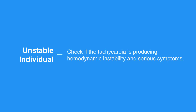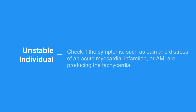Check if the tachycardia is producing hemodynamic instability and serious symptoms. Check if symptoms such as pain and distress of an acute myocardial infarction, or AMI, are producing the tachycardia. Assess the individual's hemodynamic status by establishing an IV, giving supplementary oxygen, and monitoring the heart.